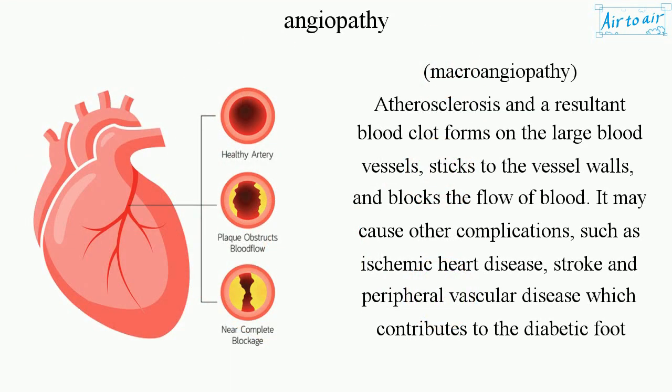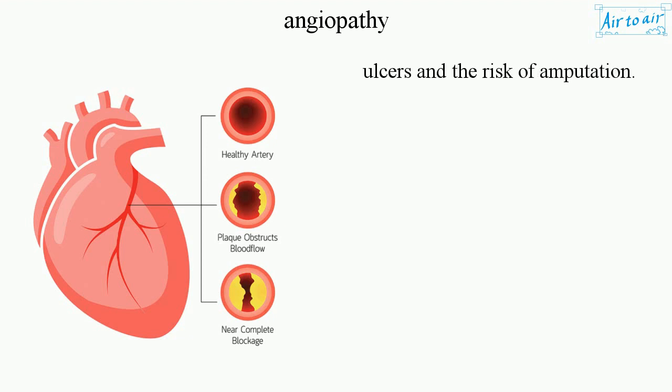Macroangiopathy: Atherosclerosis and a resultant blood clot forms on the large blood vessels, sticks to the vessel walls and blocks the flow of blood. It may cause other complications such as ischemic heart disease, stroke, and peripheral vascular disease, which contributes to diabetic foot ulcers and the risk of amputation.